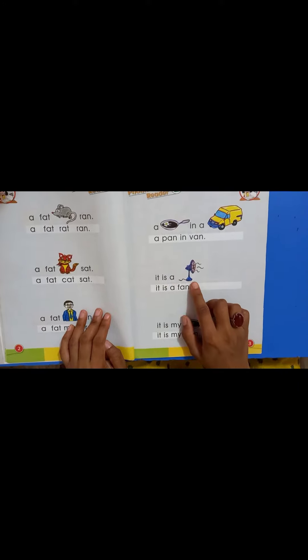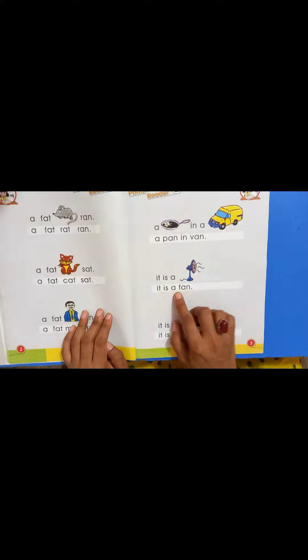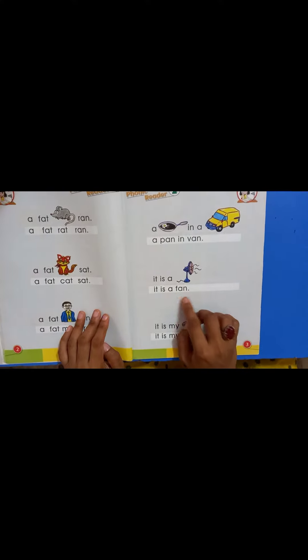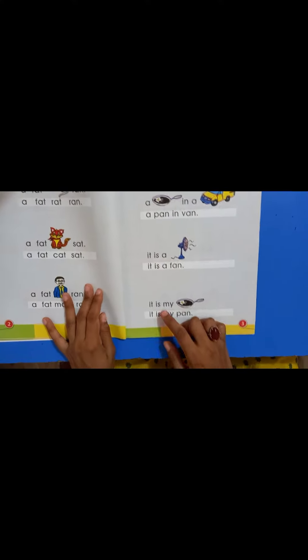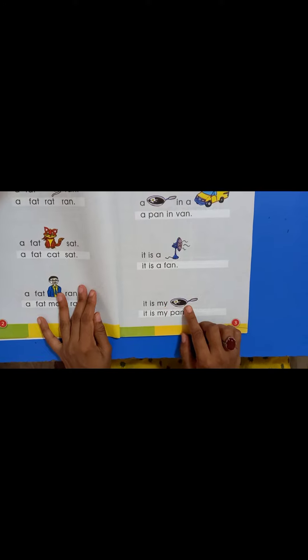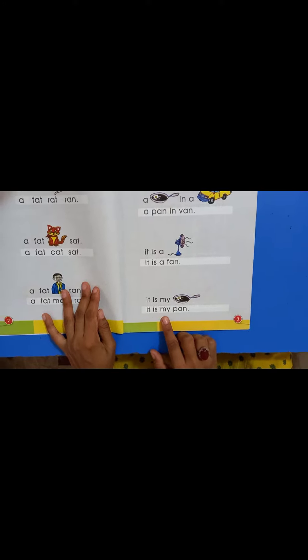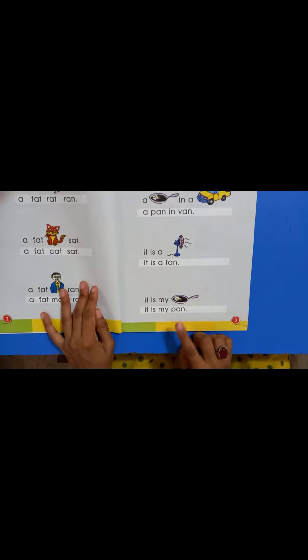It is a fan. It is a F and fan. It is my pan. It is my P and pan.